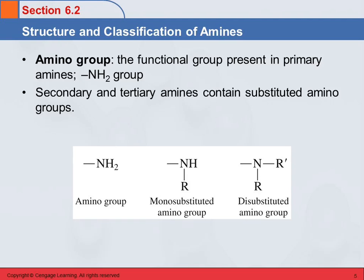We can look at an amine by focusing on the nitrogen — an ammonia with things on it. We can also focus on one of the R groups and say that the nitrogen is a substituent. It's just two different ways of looking at it, kind of the glass half-empty, glass half-full idea.